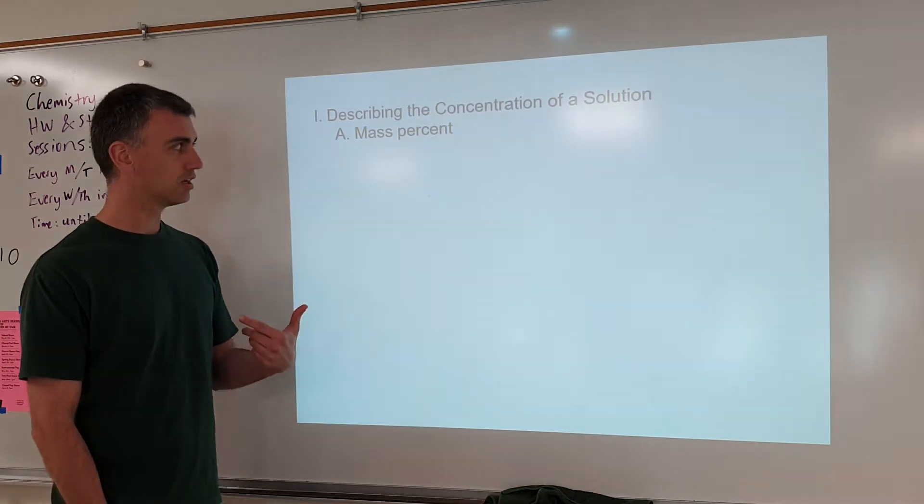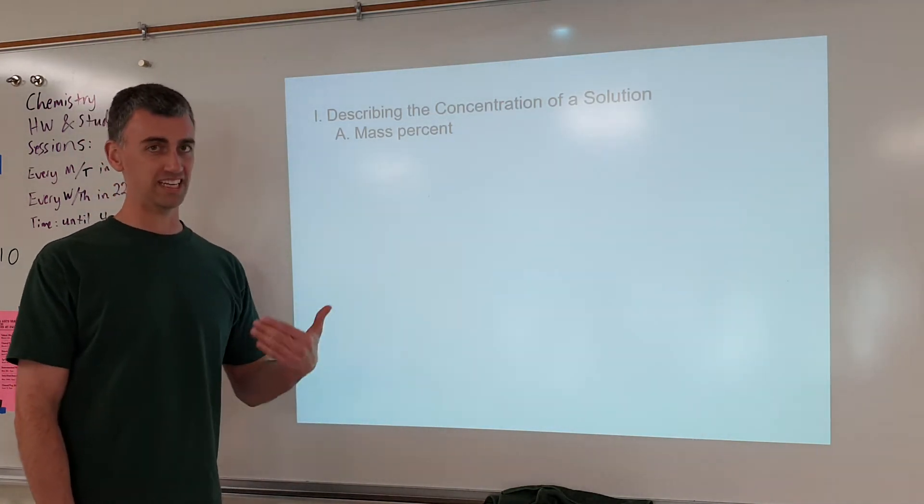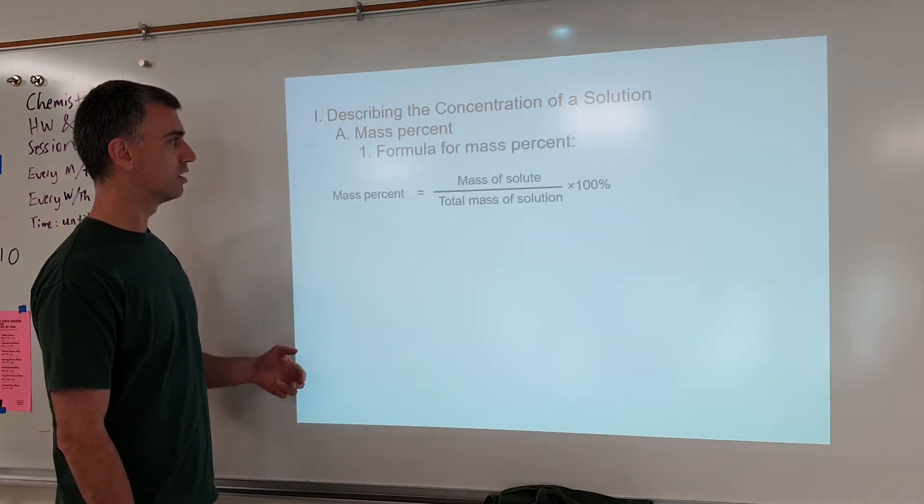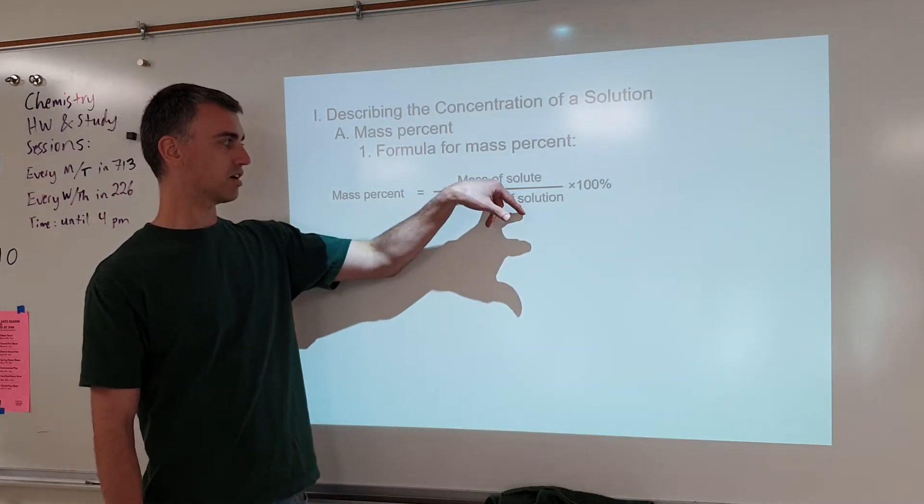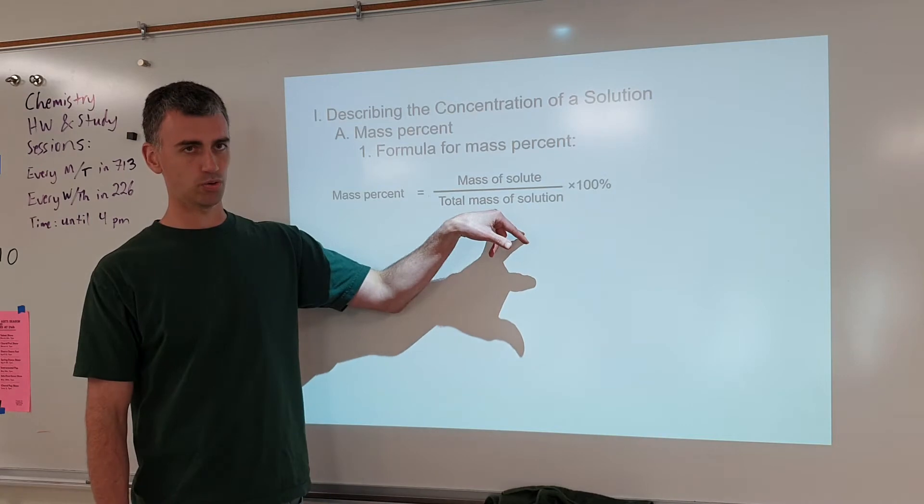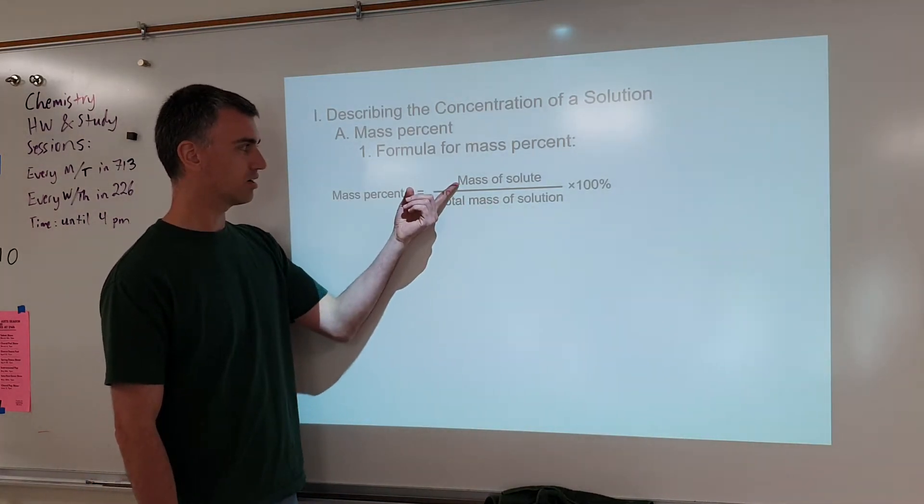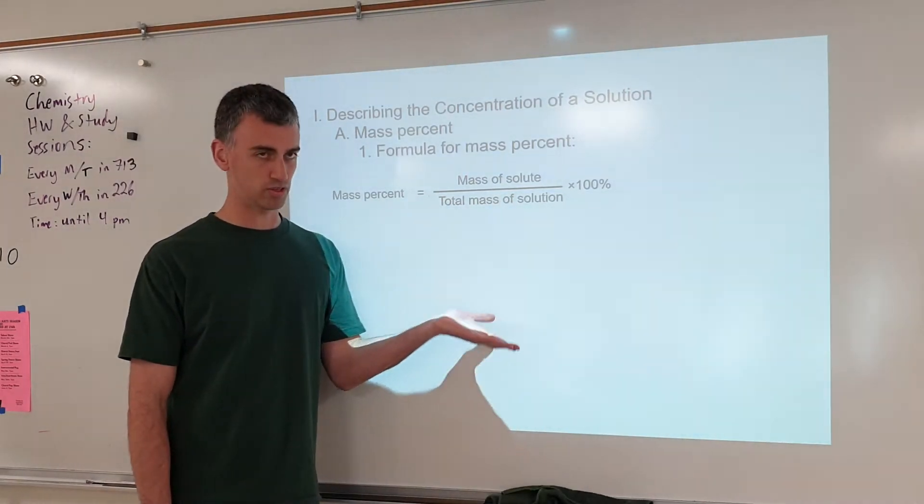But mass percent is a way of saying how concentrated is a solution and putting an actual measurement and a number on it. So with mass percent, essentially what we're doing is we're saying a mass percent says the mass of the solute is what percent out of the total mass. And this is the actual calculation. It says mass of the solute divided by total mass will give you a decimal times 100 turns it into a percent.